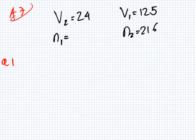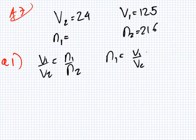Oh, well this is for babies. Even I can do this one. Right, V1 over V2 equals N1 over N2. So N1 is V1 over V2 times N2.